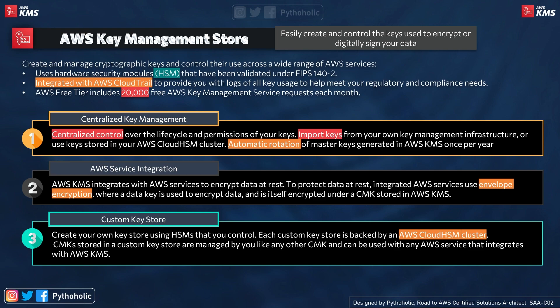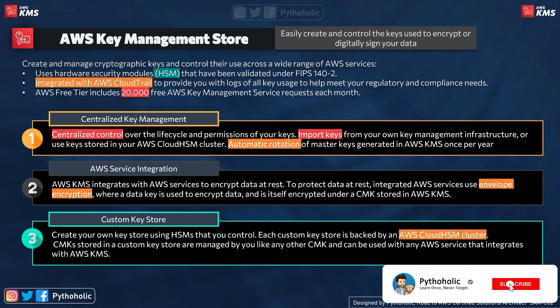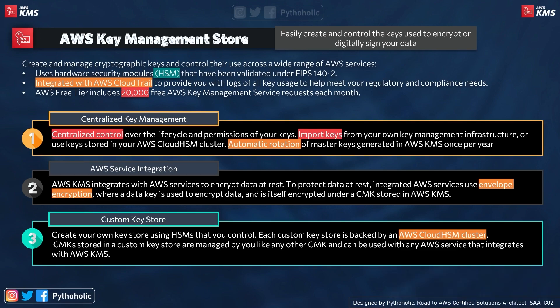The third benefit is custom key store. In KMS, you can have your own custom key store backed by a hardware security module to provide the level of security you need. CMKs stored in the custom key store are managed by you like other CMKs and can be used with any AWS service that integrates with AWS KMS, rather than using AWS default key stores.